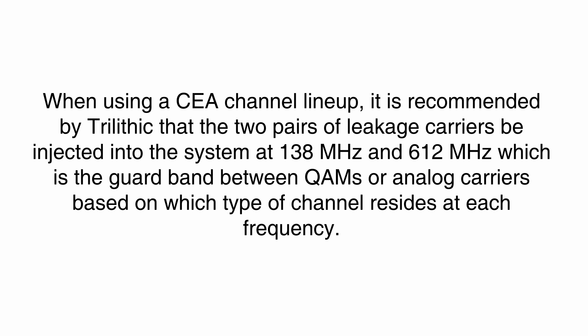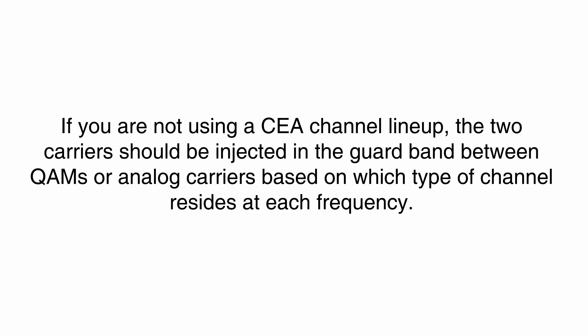When using a CEA channel lineup, Trilithic recommends that the two pairs of leakage carriers be injected into the system at 138 MHz and 612 MHz, which is the guard band between QAMs or analog carriers based on which type of channel resides at each frequency. If you are not using a CEA channel lineup, the two carriers should still be injected in the guard band between QAMs or analog carriers based on which type of channel resides at each frequency.